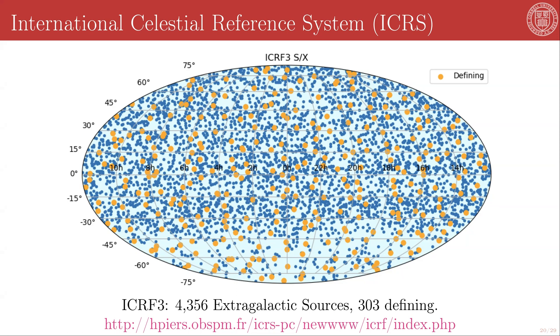This is based on 40 years of data from very long baseline interferometric measurements of extragalactic radio sources. Originally using 2.3 and 8.4 gigahertz bands for the last 15 years, 24 and a mixture of 8.4 and 32 gigahertz bands. And these measurements track 4,356 extragalactic sources. And of these, 303 are selected as being the best quality data and therefore are the defining sources for this reference frame.